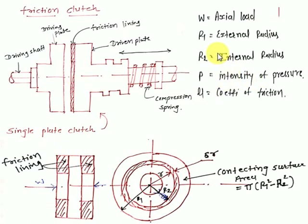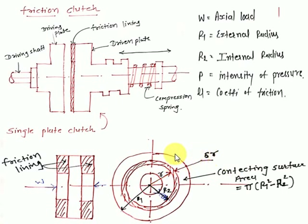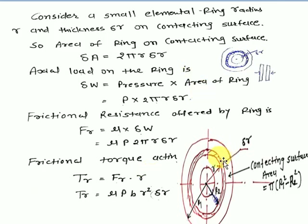Now you can see the side view. To make it easy to understand, first we consider only a small δr portion at a distance r. After finding the equation for torque T, we will derive it for outer and inner radius limits. We will integrate with limits from r2 to r1 and finally derive the equation for torque.